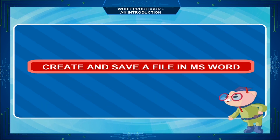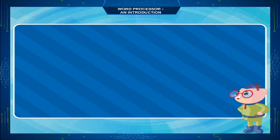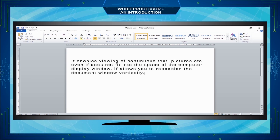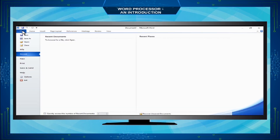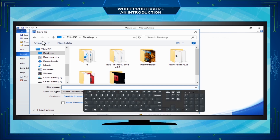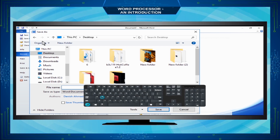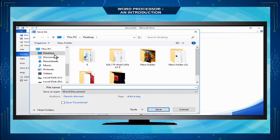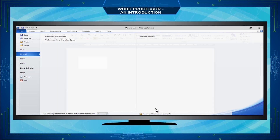To create and save a file in MS Word: type your document, click the File tab and select the Save As command. The Save As dialog box appears, or press Ctrl+S. Choose a location for your file, type a name in the file name text box, and click the Save button. Your document will be saved.